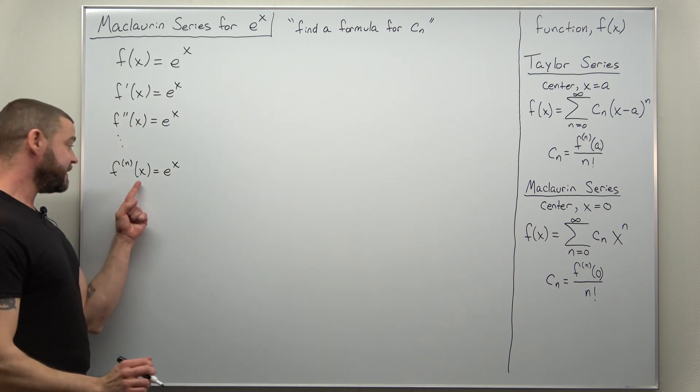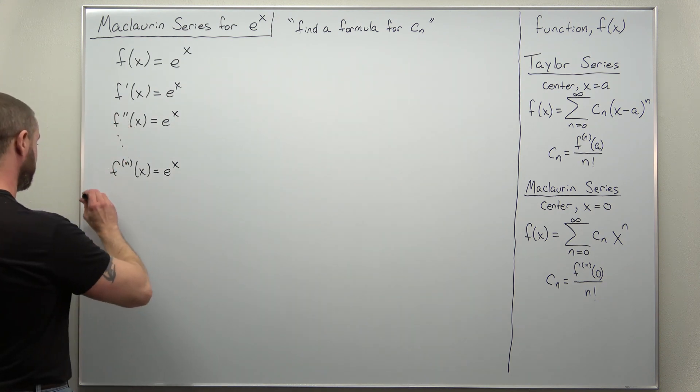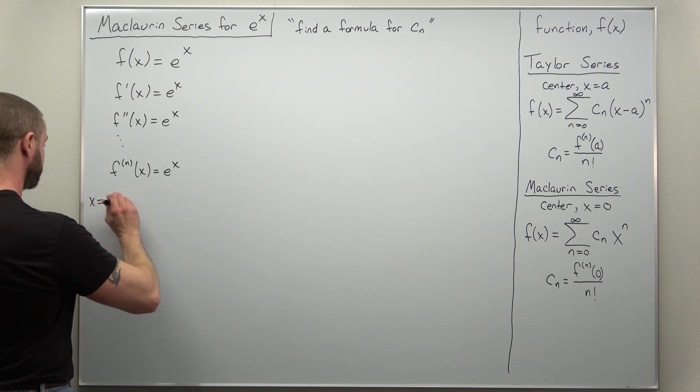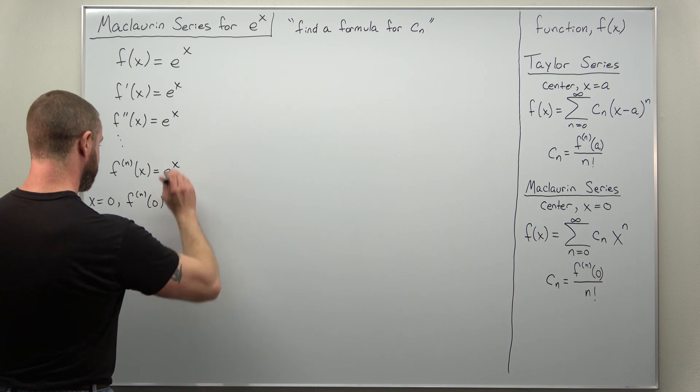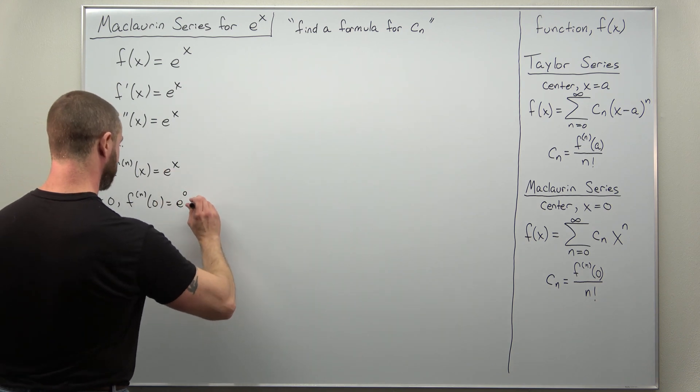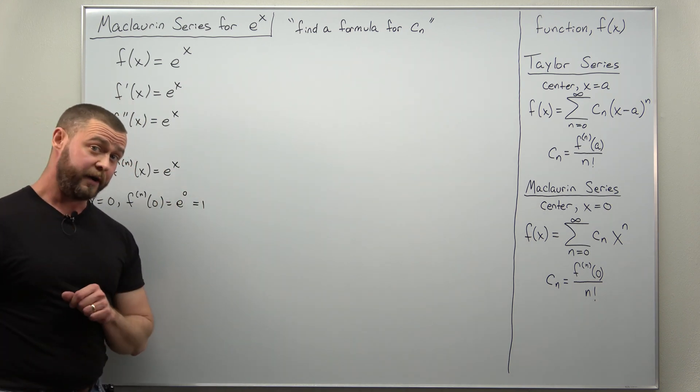Now for a Maclaurin series we're going to evaluate this at x equals zero and we get e to the zero which is one.